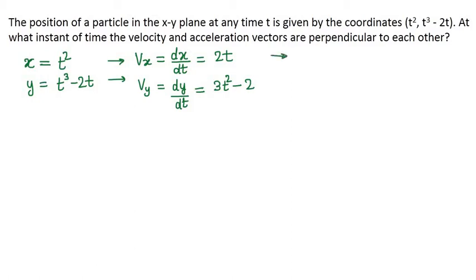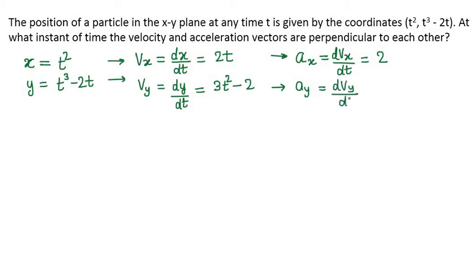Again, let us differentiate one more time. If we differentiate the x-component of velocity with respect to time, we will get the x-component of acceleration, ax. Differentiation of 2t will be 2. And the y-component of acceleration will be dvy/dt, the rate of change of the y-component of velocity. Differentiating 3t², we get 3 × 2t and differentiation of the constant is 0. Therefore, ay is equal to 6t.